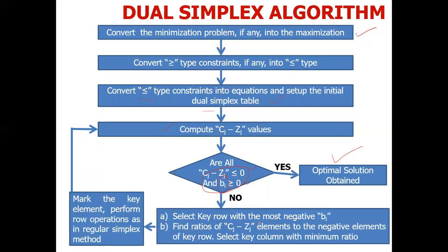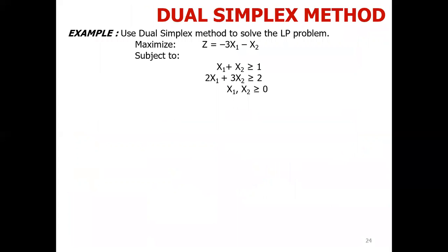We will then calculate the ratios. When we took ratios in the simplex method or big-M, we did right-hand side divided by the corresponding pivot column elements, and the pivot column elements should not be negative or zero. Here, if there is a zero or positive value in the pivot row, then you have no corresponding ratio. Let's do the example where it will become clear.